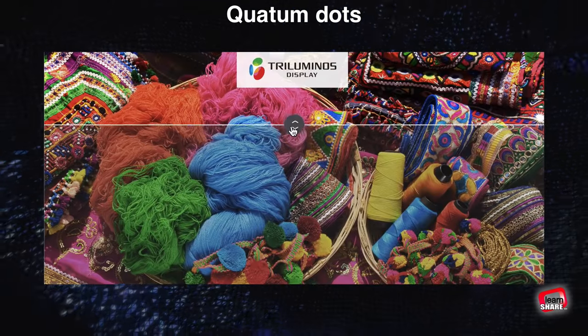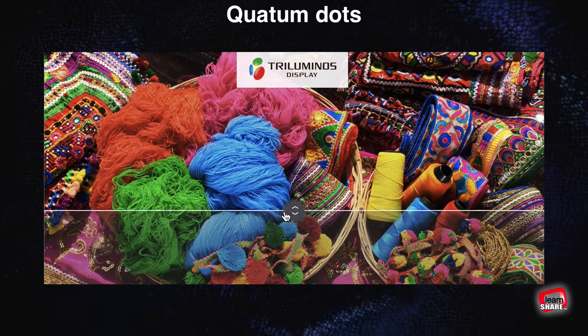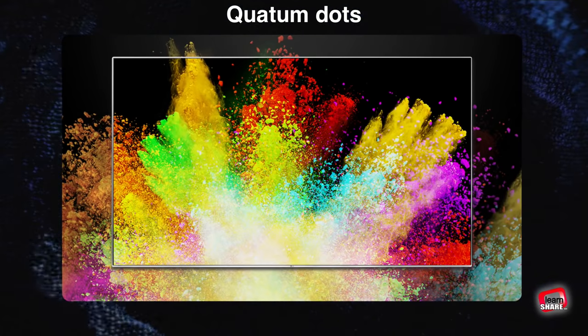But there are alternatives to quantum dots when it comes to expanding color range. Triluminos models from Sony use wide-range phosphors, and LG uses nanocells in its high-end TVs.